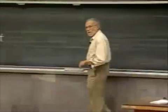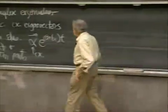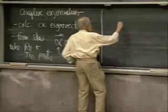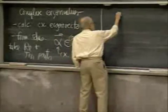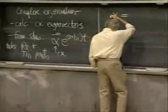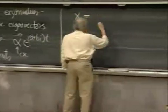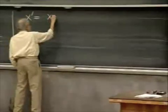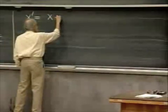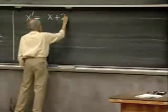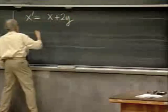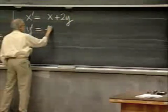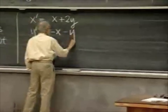I'd like to give you a simple example of working that out. It's the system x prime equals x plus 2y and y prime equals minus x minus y.